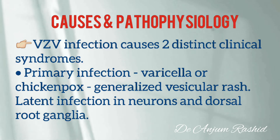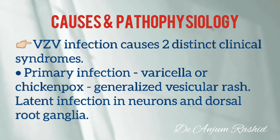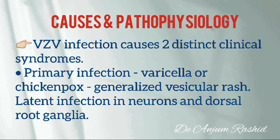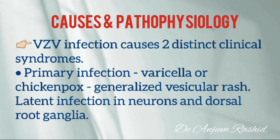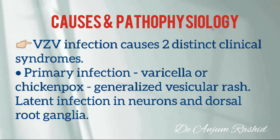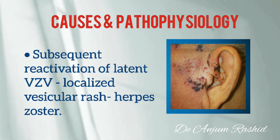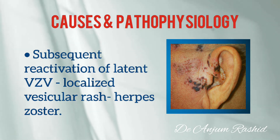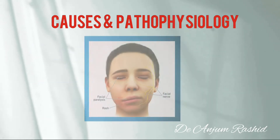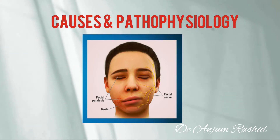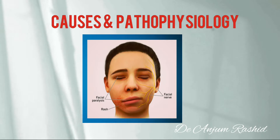Varicella zoster virus infection causes two distinct clinical syndromes. First is the primary infection, also known as varicella or chickenpox — a common pediatric illness characterized by a highly contagious generalized vesicular rash. After chickenpox, varicella zoster virus remains latent in the neurons of the cranial nerve and dorsal root ganglia. Second is the subsequent reactivation of the latent varicella zoster virus, which can result in a localized vesicular rash known as herpes zoster.